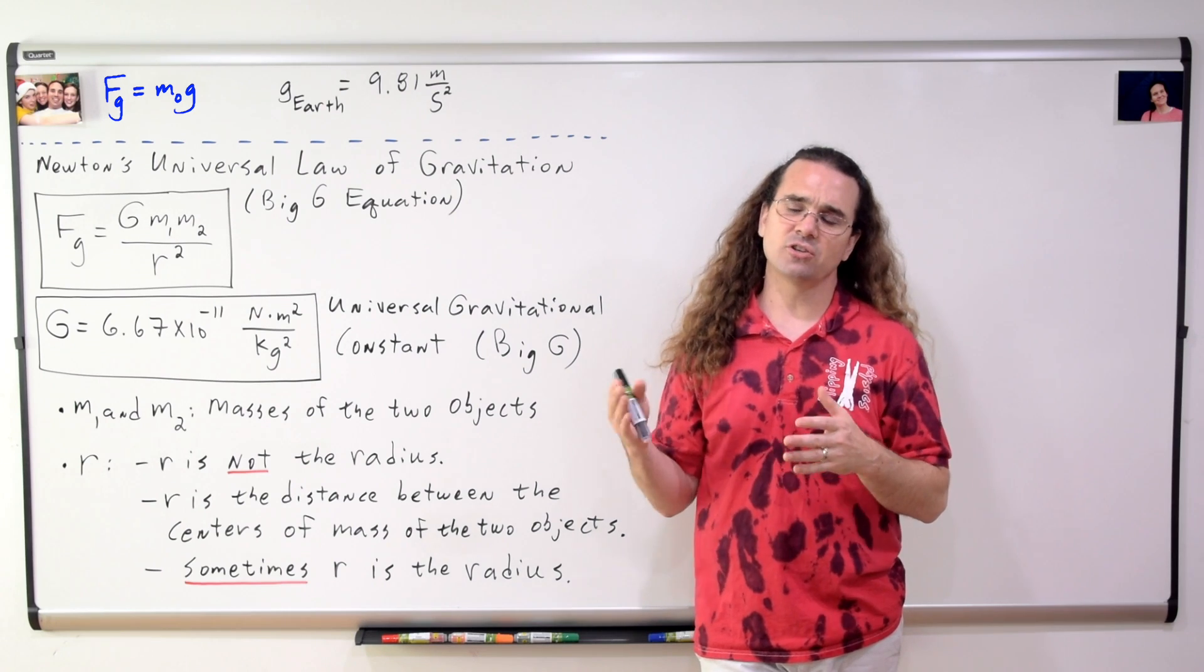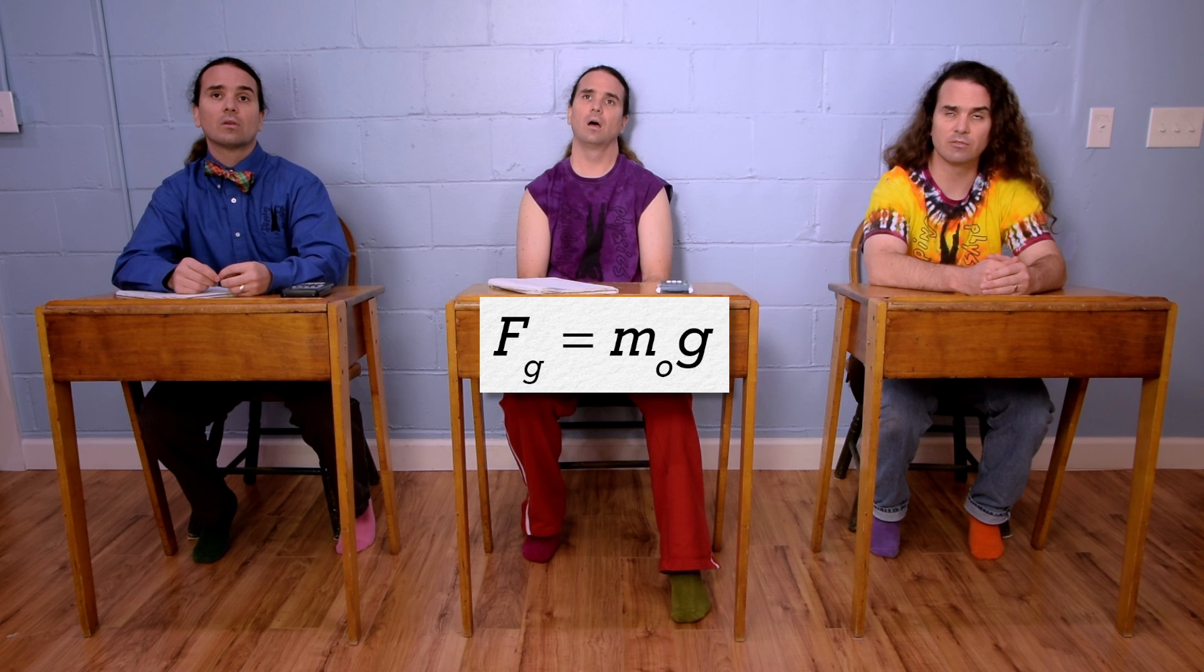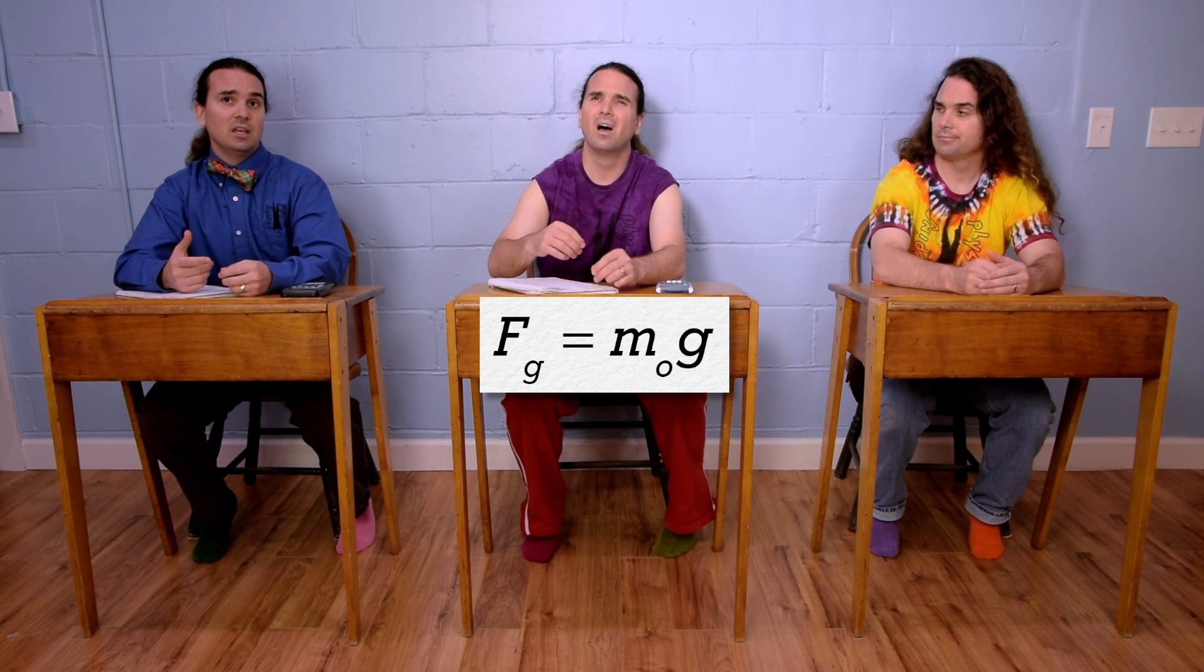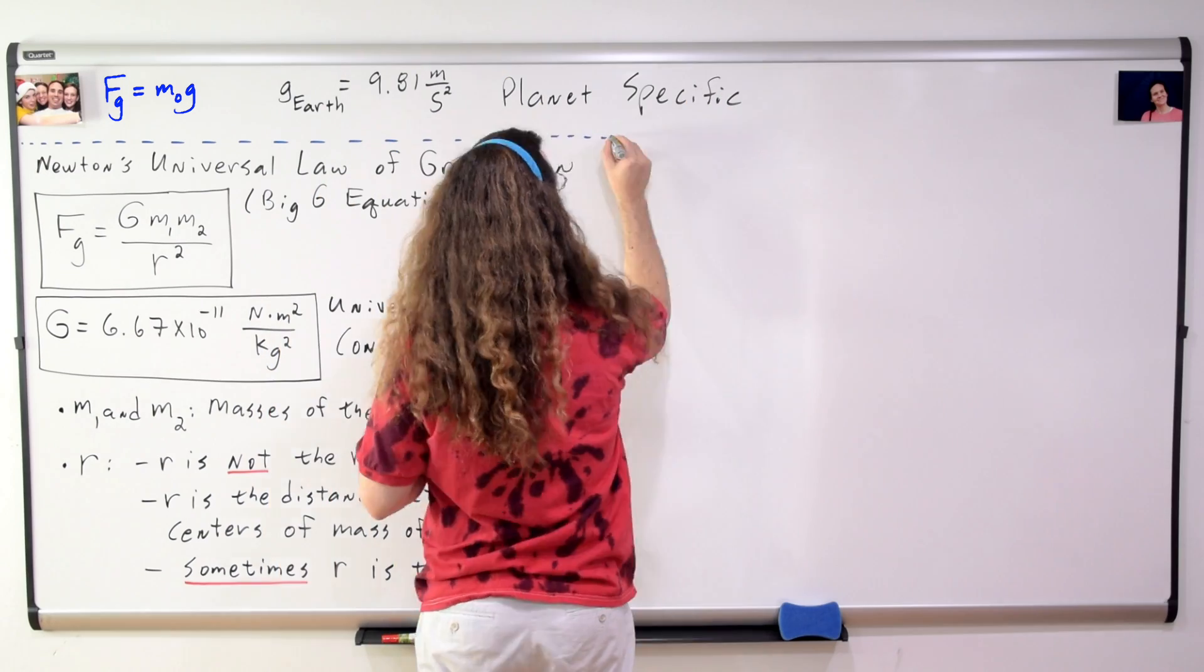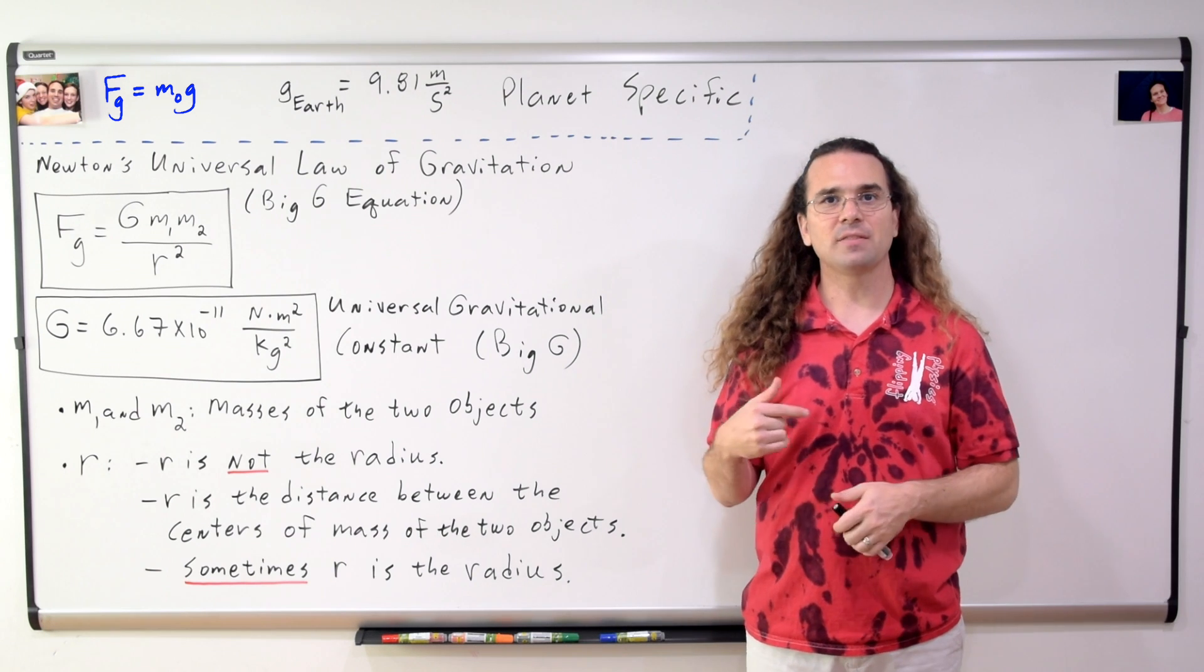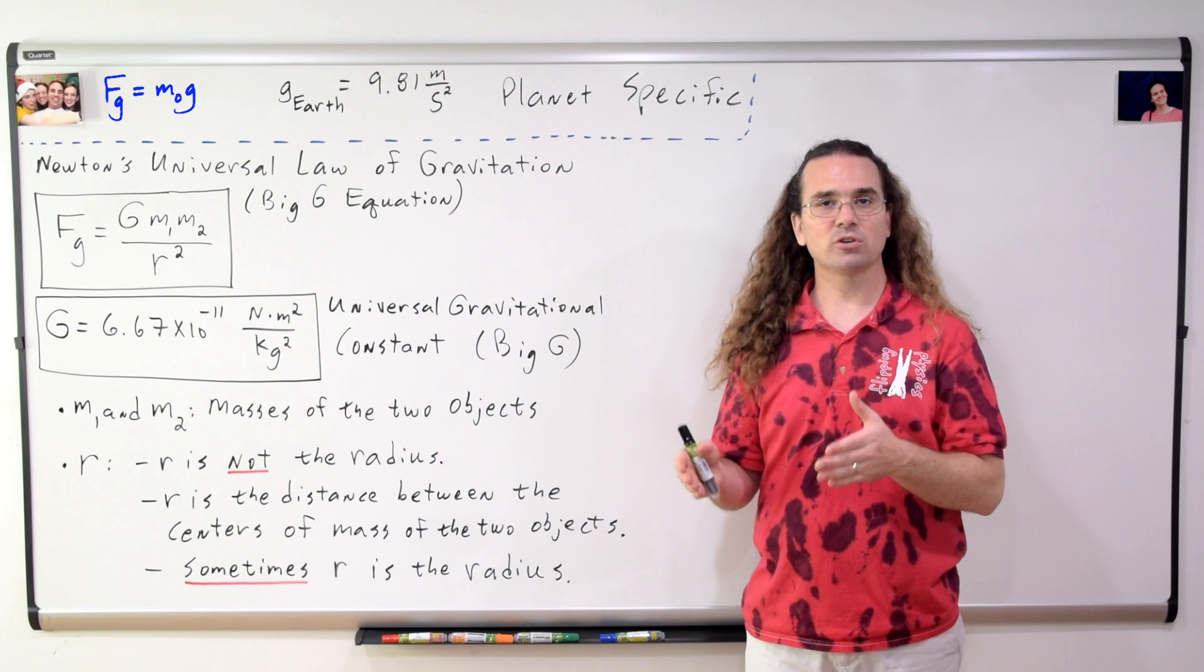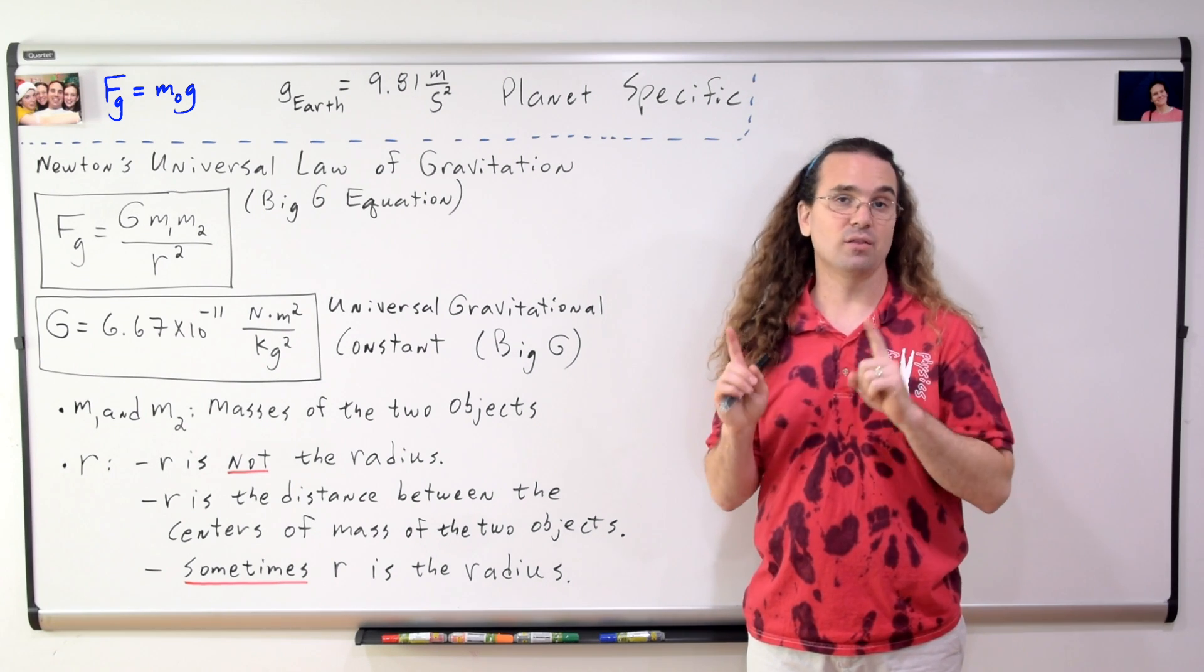That is the force of gravity between an object and the Earth. Remember, the object needs to be near the surface of the Earth. If the object is in orbit, then that equation is not valid. Yeah, that's correct. I prefer to realize we could be on a planet other than Earth and identify that this equation is a planet specific equation. We can find the force of gravity or the weight of any object on a planet using this equation.